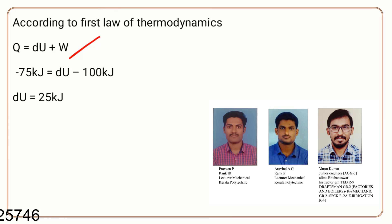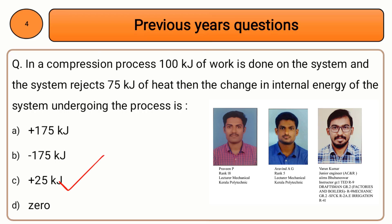Applying sign conventions: heat rejected by the system is negative, so Q equals −75 kJ; work done on the system is negative in this convention, so W equals −100 kJ. Using the first law, change in internal energy equals Q minus W equals −75 minus (−100) equals +25 kJ. The answer is option C: +25 kJ.